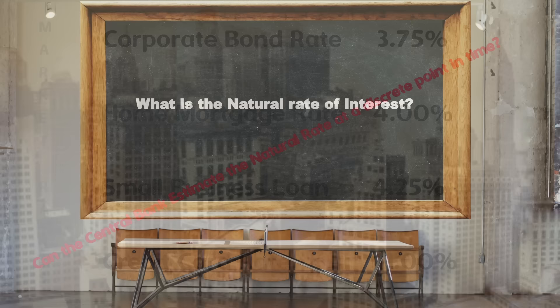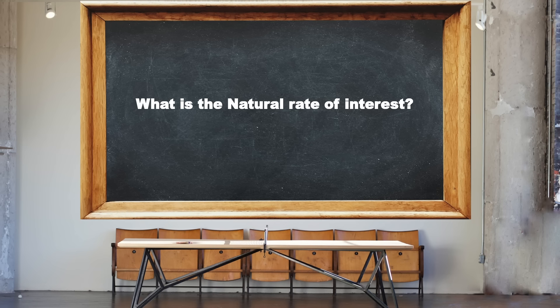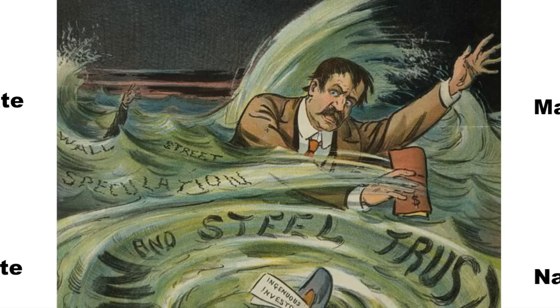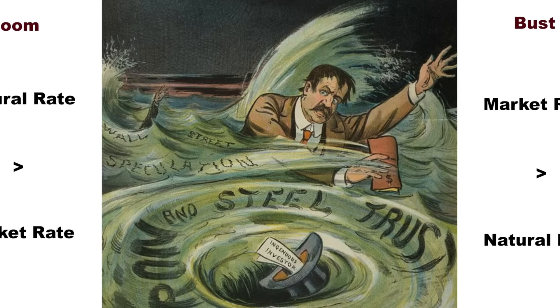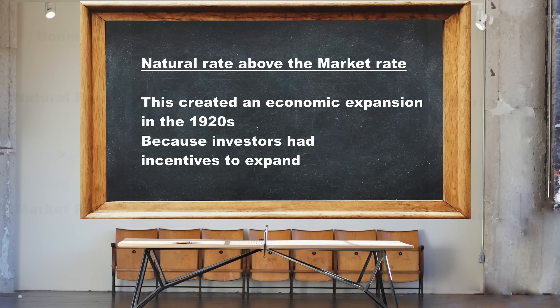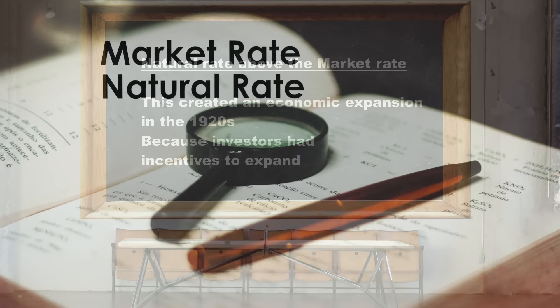A business cycle such as the Great Depression is expressed as a disequilibrium between the two rates of interest — the observable market rate and the natural rate. This is not to be confused with the Fisher real rate of interest, which is taking the nominal rate of interest and subtracting the inflation rate. The natural rate is the rate that would equilibrate the market for money or loanable funds. Let's examine what these two rates are — the market rate and the natural rate — in further detail.